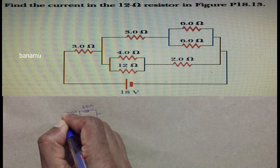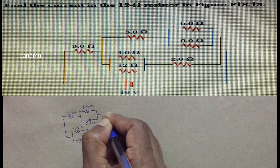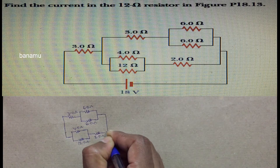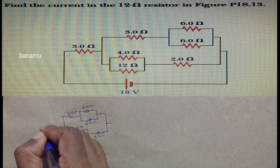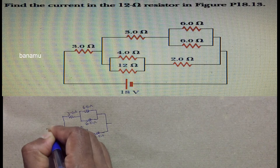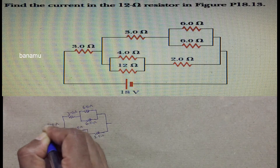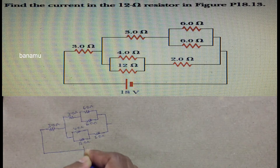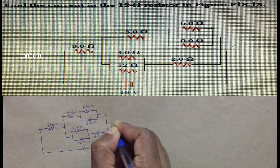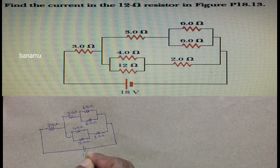The upper and lower circuits are connected in parallel to each other, and that parallel combination is connected to a 3 ohm resistance in series. The entire circuit is connected to an 18 volts battery.